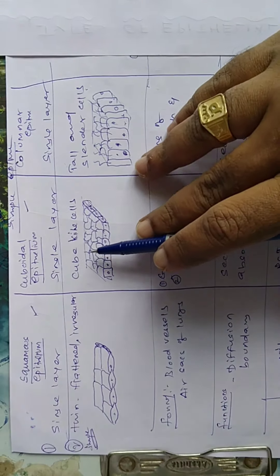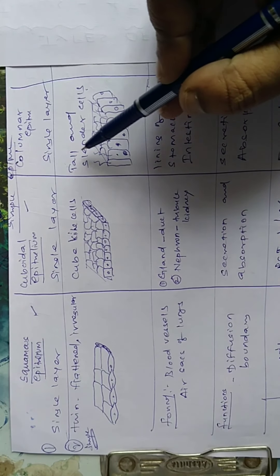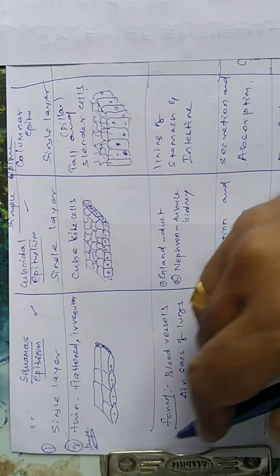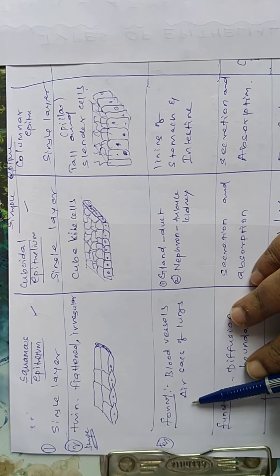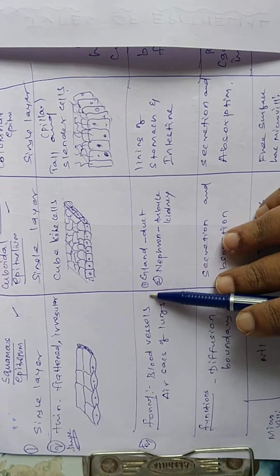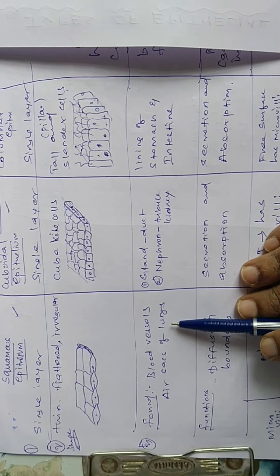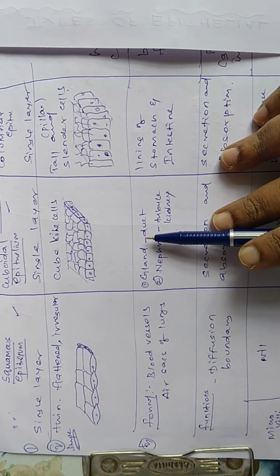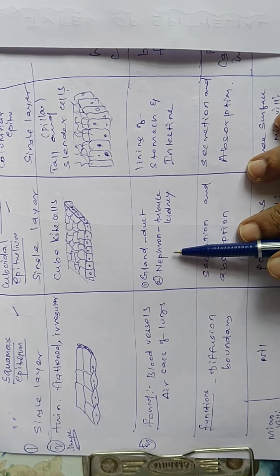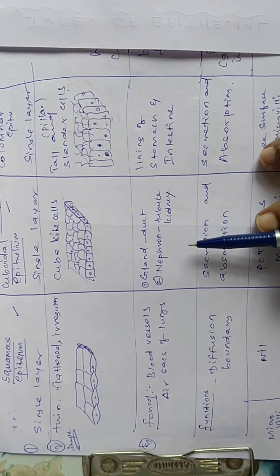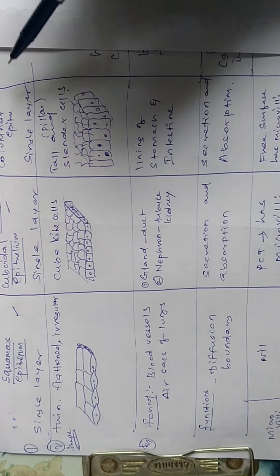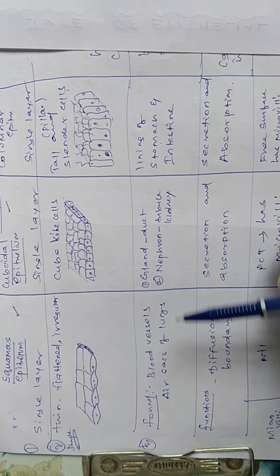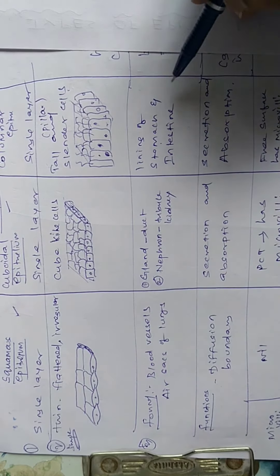Cuboidal — cube shaped. Columnar — tall and slender, like a pillar, generally called pillar-shaped cells. Third point: where it is found in our body. Squamous epithelium is found in blood vessels and air sacs of the lungs. Cuboidal epithelium is found in glands — endocrine gland, exocrine gland, salivary gland, pituitary gland — and in the nephron tubule of the kidney. Columnar epithelial tissue is found in the inner lining of the stomach and intestine.